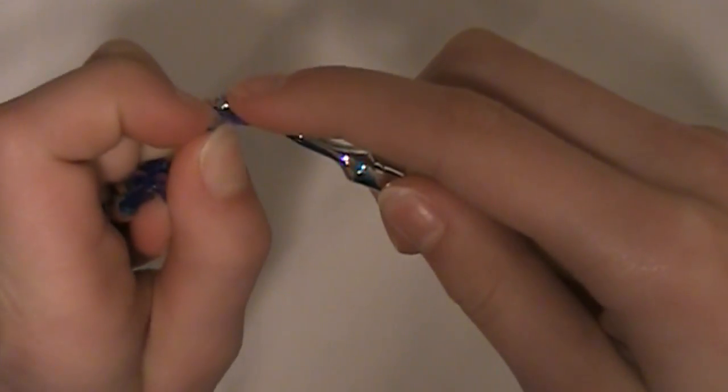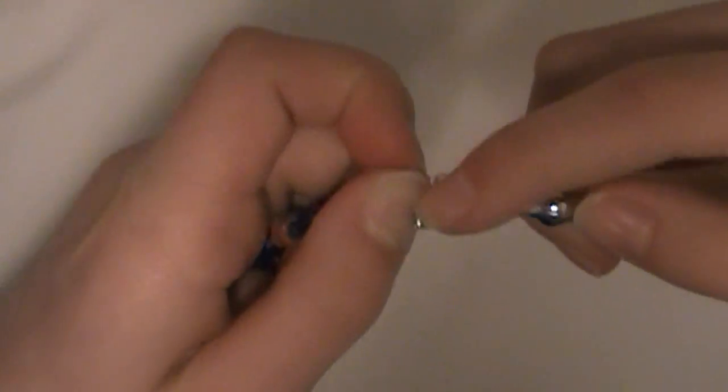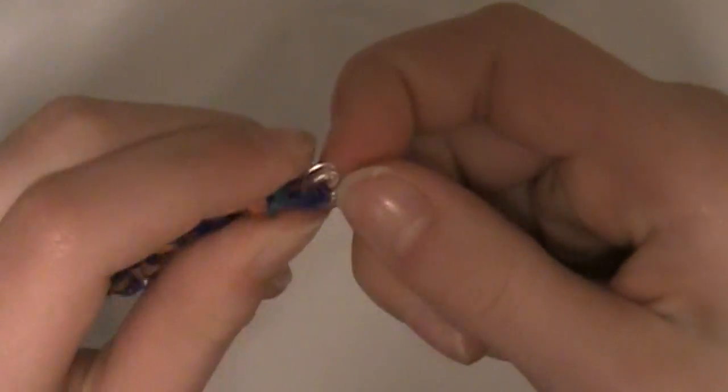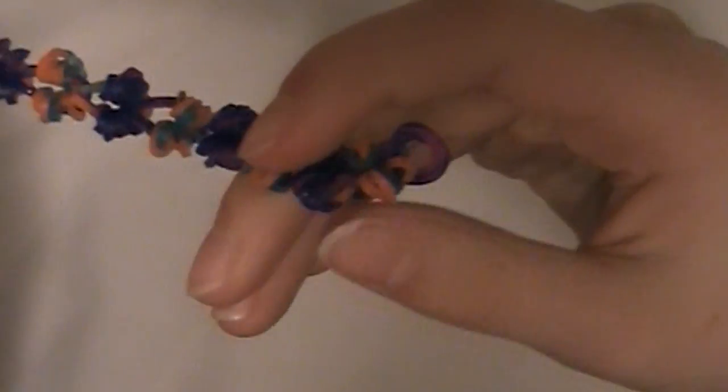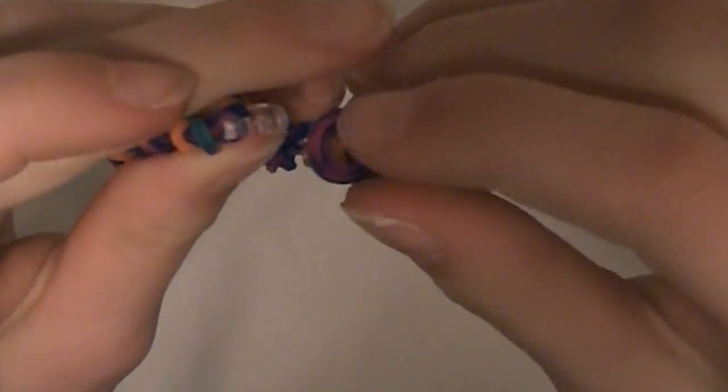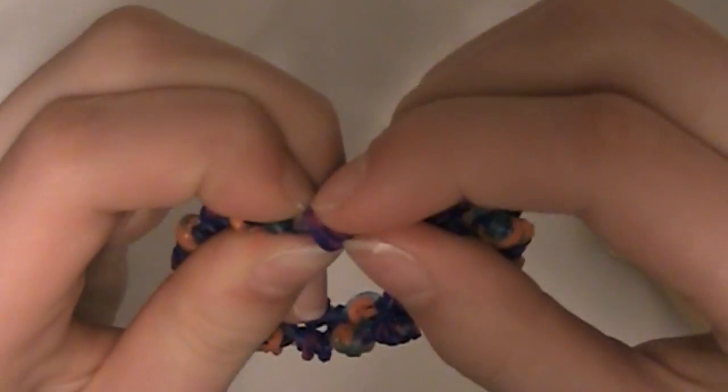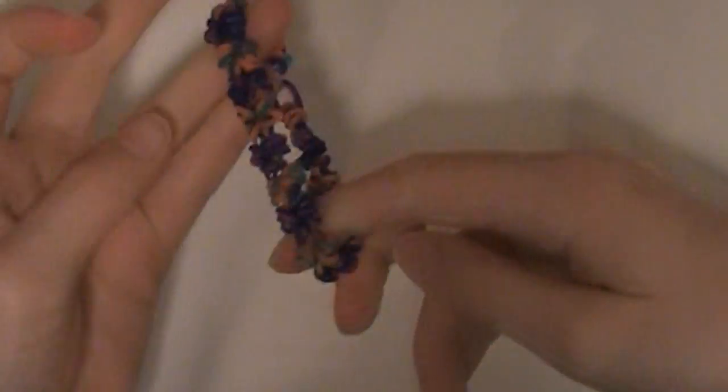And to do this we are just going to take our C clip. Stretch this a little bit. And put both ends on to there. And then we are going to pull out our hook. And then that's on there. And then take the capping band over here. And clip that on like so. And there you have finished your bracelet.